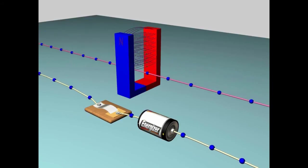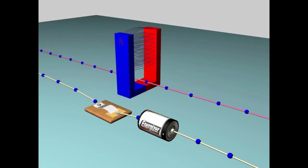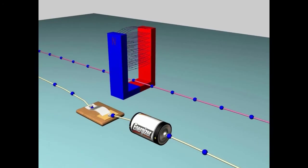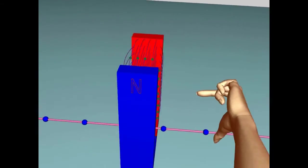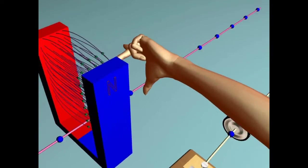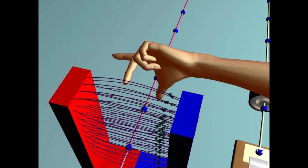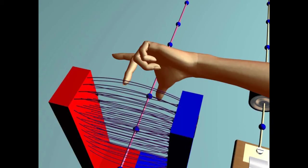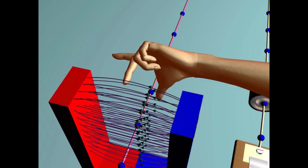The answer is yes. Remember the animation that showed the wire moving down. The rule that tells us the direction of the force is called Fleming's Left Hand Rule. The left hand in the display predicted the direction of pushing previously. Fleming's Left Hand Rule states that if the first finger aligns with the direction of the magnetic field, pointing from north to south...